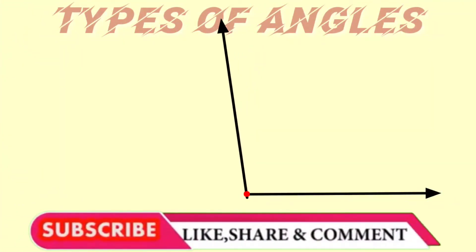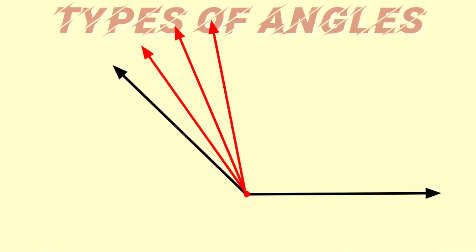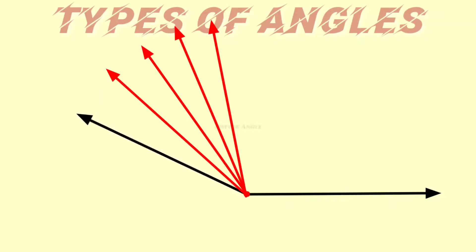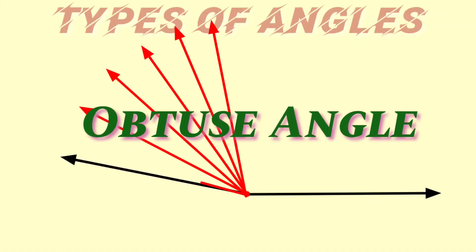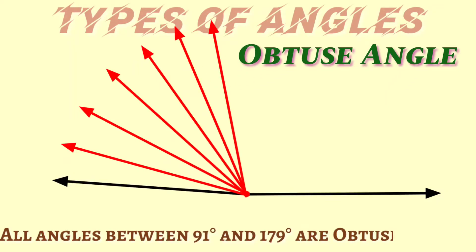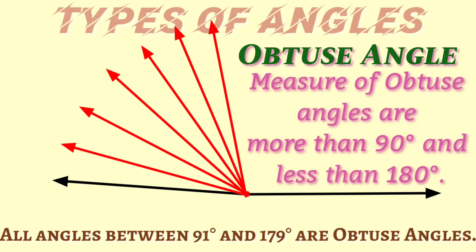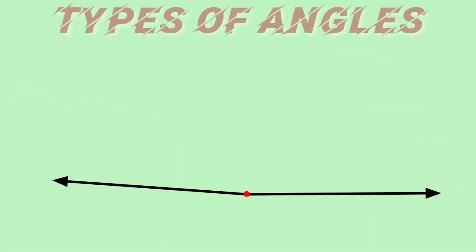If we turn the second arrow further, we get various other angles. These angles are obtuse angles. An obtuse angle is from 91 degrees up to 179 degrees — that is, more than 90 degrees and less than 180 degrees. All angles between 90 and 180 degrees are obtuse angles.